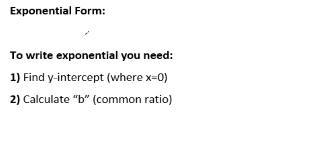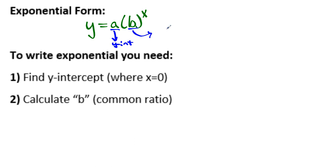The exponential form — we've done two days of it now. Y equals A times the quantity of B to the X power. Remember, A is your Y-intercept, and B is your scale factor, which is also known as the R value. To write an exponential equation, all you need is these two things. We'll talk about how you can calculate the common ratio when given a table or a graph — we're just looking at what's being multiplied, and we might use division to find that out.